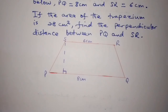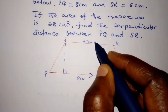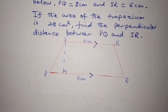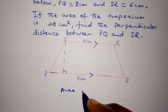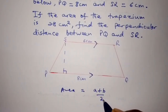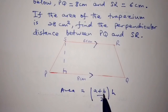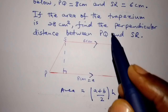A trapezium is a quadrilateral with only two of its opposite sides being parallel. So these two sides are parallel to one another. The area of a trapezium is given by the formula (A + B) / 2 multiplied by H, where A and B are the two parallel sides.